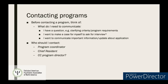Before contacting a program, think: what do I need to communicate? Am I just putting my name on their radar, or do I have specific things to say — like clarifying eligibility criteria from your Excel sheet, making a case for an interview, or communicating something important like an updated Step 3 score that you've now assigned to their program? Having a clear reason to reach out is important before sending that email.